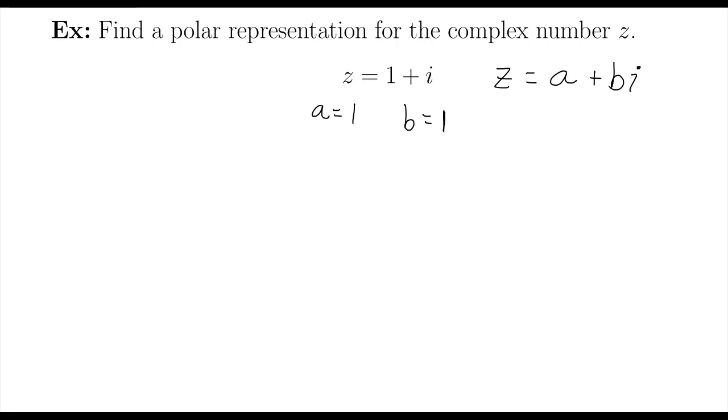So to find the polar representation, I want to write z in the form the magnitude of z, which is the same as saying the radius if you're talking about polar coordinates, times cosine of an angle plus i times sine of that same angle, and instead of writing this every time